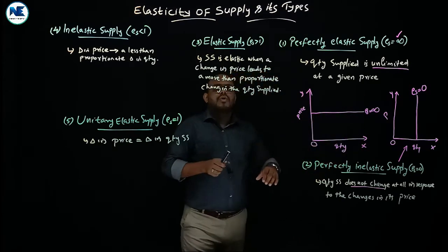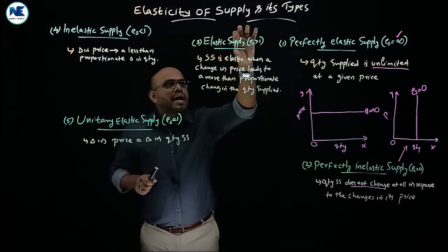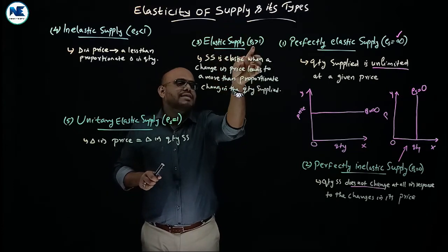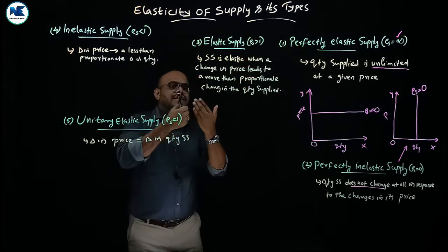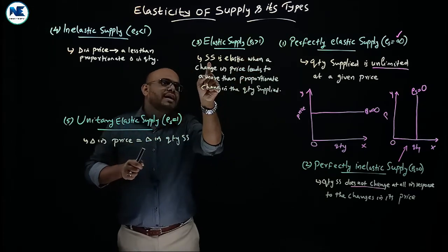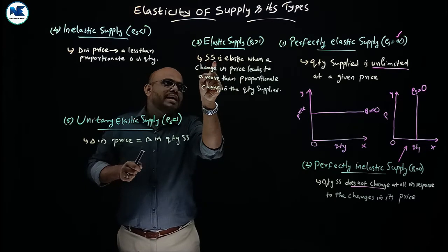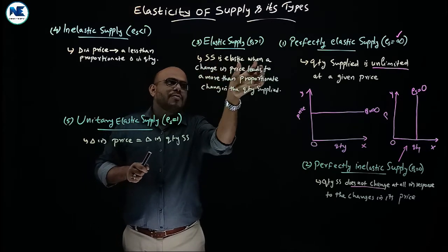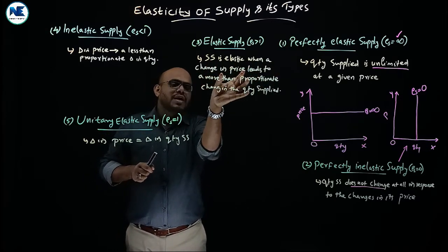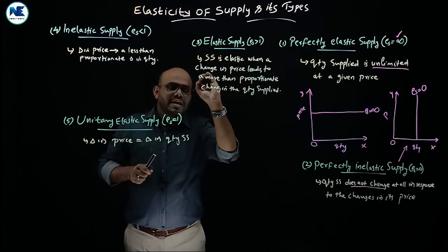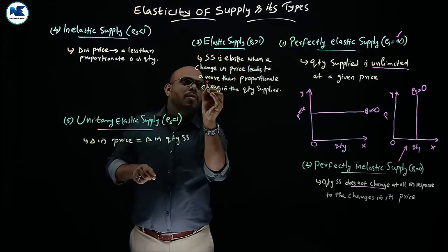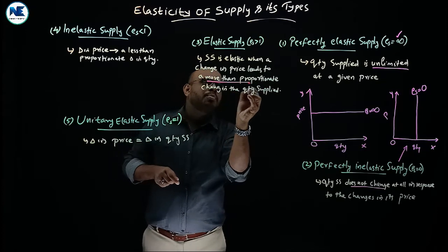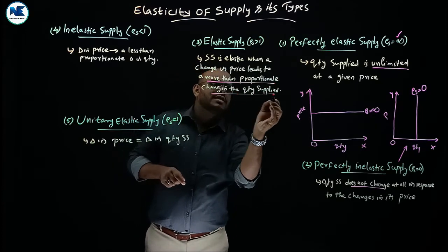The third type is elastic supply. Here the coefficient of elasticity of supply is greater than one. Supply is elastic when a change in price leads to a more than proportionate change in the quantity supplied.